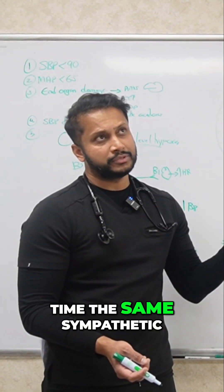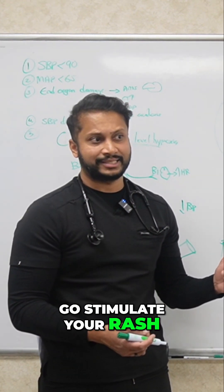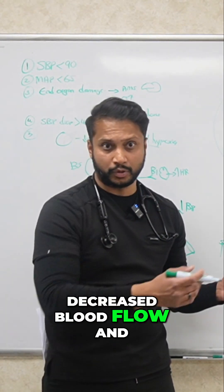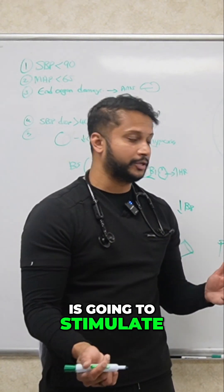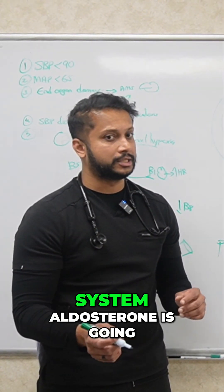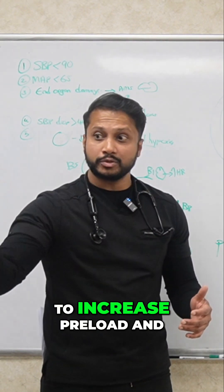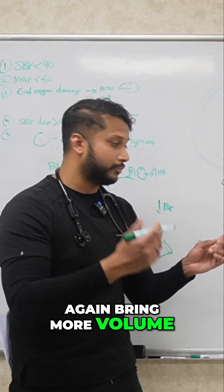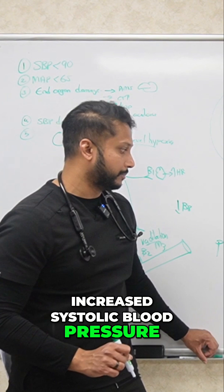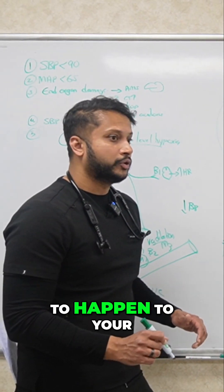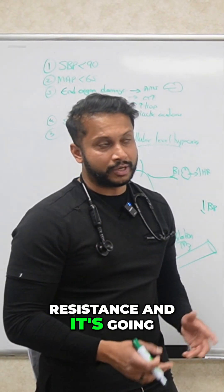At the same time, that same sympathetic stimulus is also going to activate your RAS system because you have decreased blood flow. Even having less blood flow to the kidney is going to stimulate the RAS system. If you activate the RAS system, aldosterone is going to reabsorb sodium and water, so you're going to increase preload and bring more volume in — which again contributes to an increased systolic blood pressure. And your diastolic blood pressure is going to increase too, because of increased resistance.